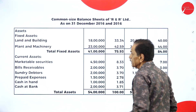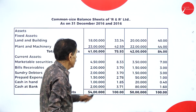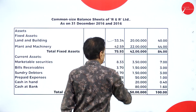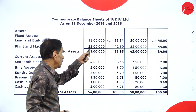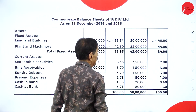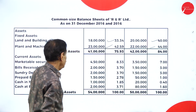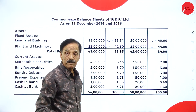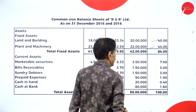Then go to the asset side of the balance sheet — fixed assets: land and building. 18 lakh divided by 54 lakh into 100 is 33.34. 20 lakh divided by 50 lakh is 40%. Plant and machinery: 23 lakh divided by 54 lakh into 100 is 42.59, and 22 lakh divided by 50 lakh is 44%. Total fixed assets: 41 lakh divided by 54 lakh into 100 is 75.93, and 42 lakh divided by 50 lakh into 100 is 84%.